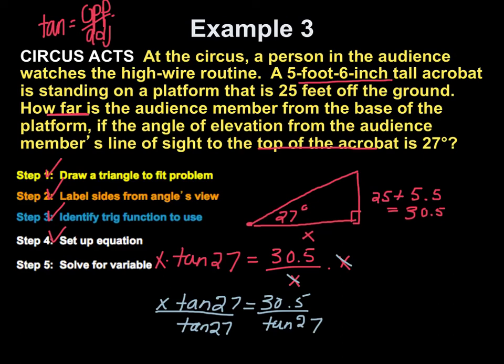So, on the left hand side, the tangents cancel. And that's now I've got x by myself. So, I have to do 30.5 and divide it by the tangent of 27. And when I do, I get x is equal to 59.86. Yeah, to the nearest hundredth, 59.86 is the distance between the audience member and the base of the platform. And this is in feet.